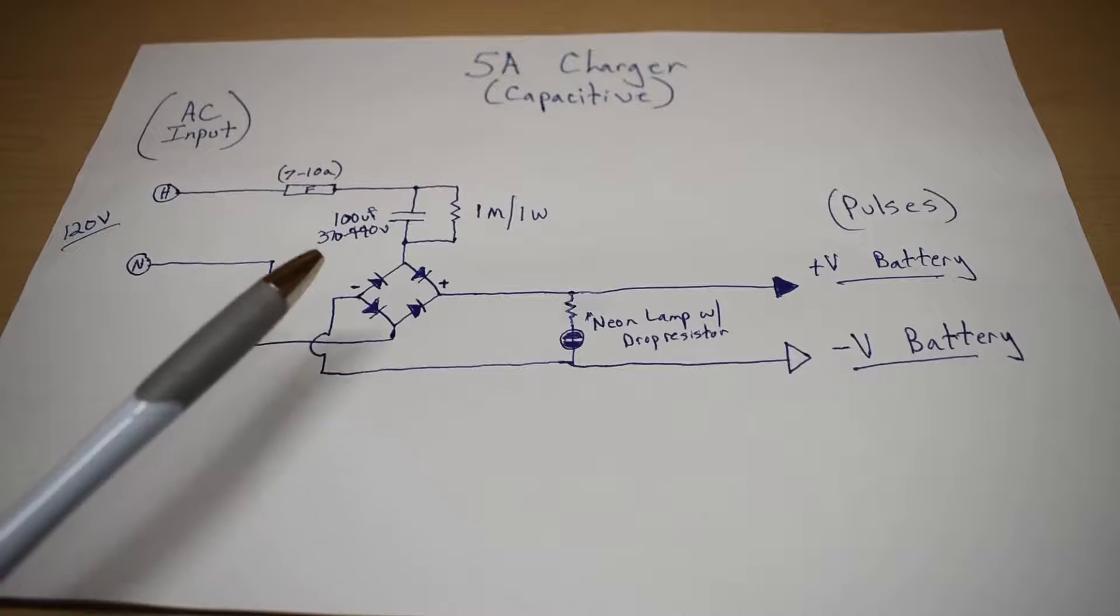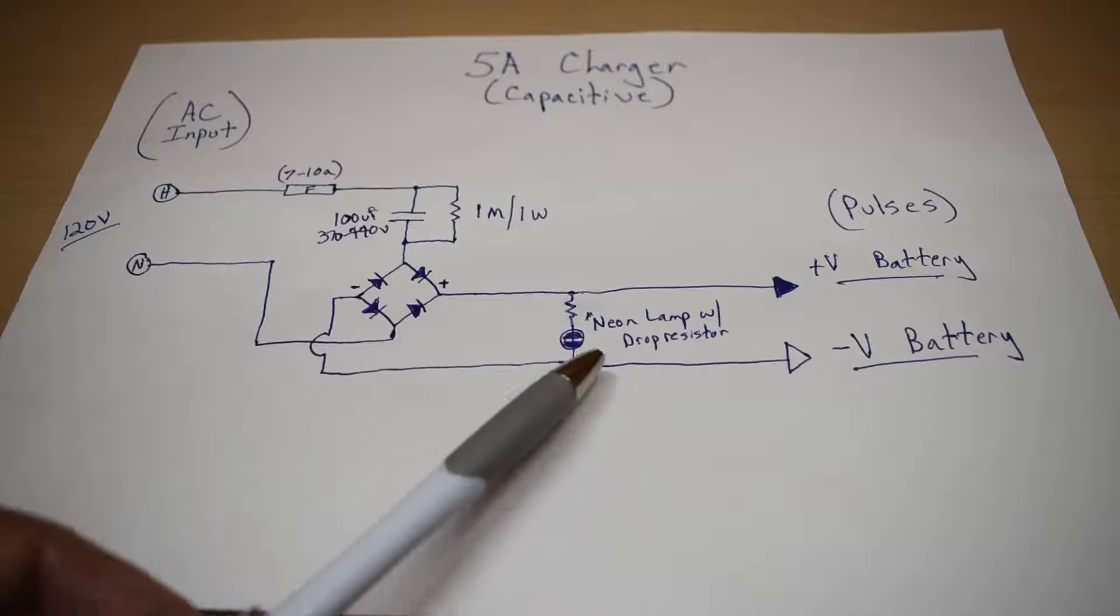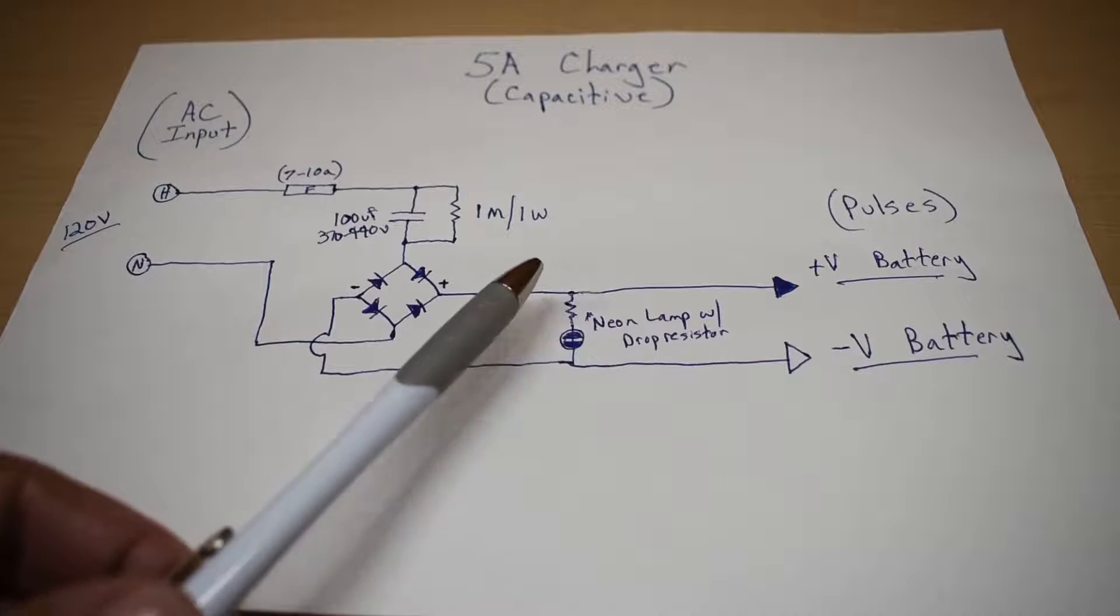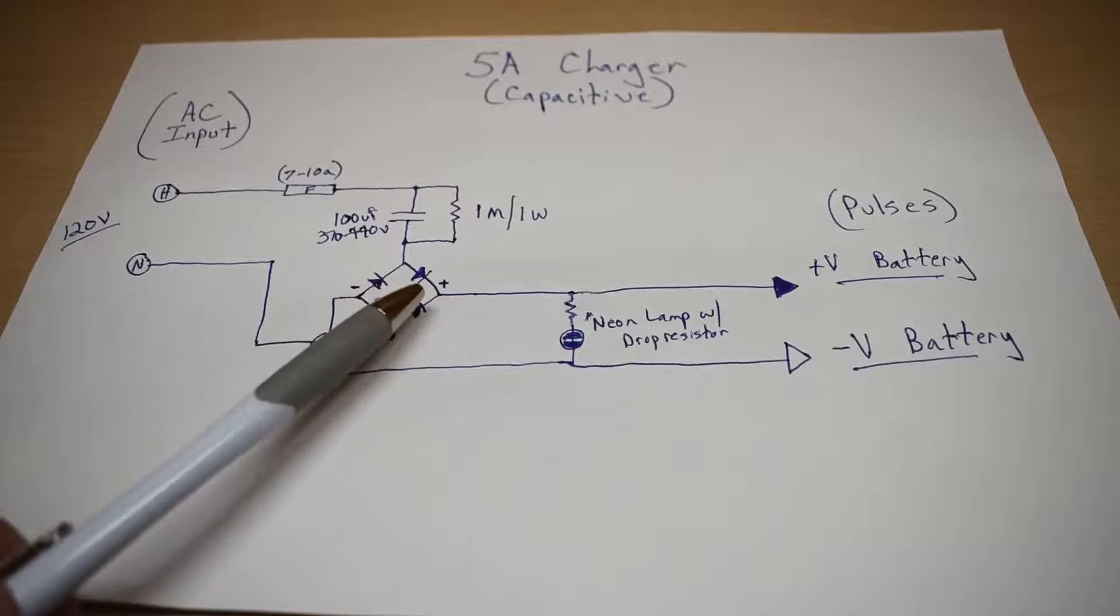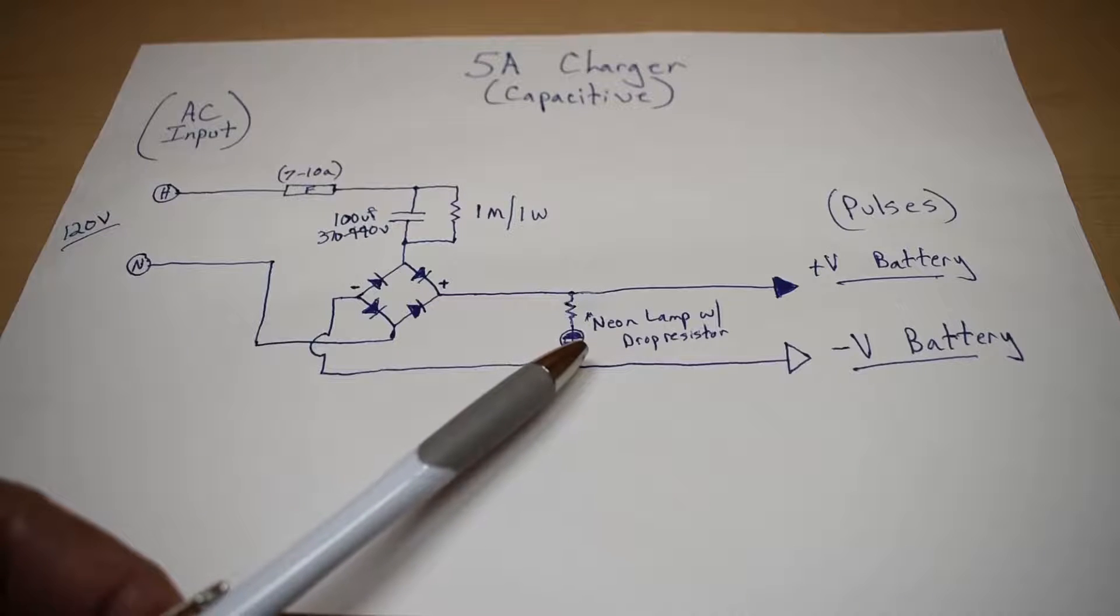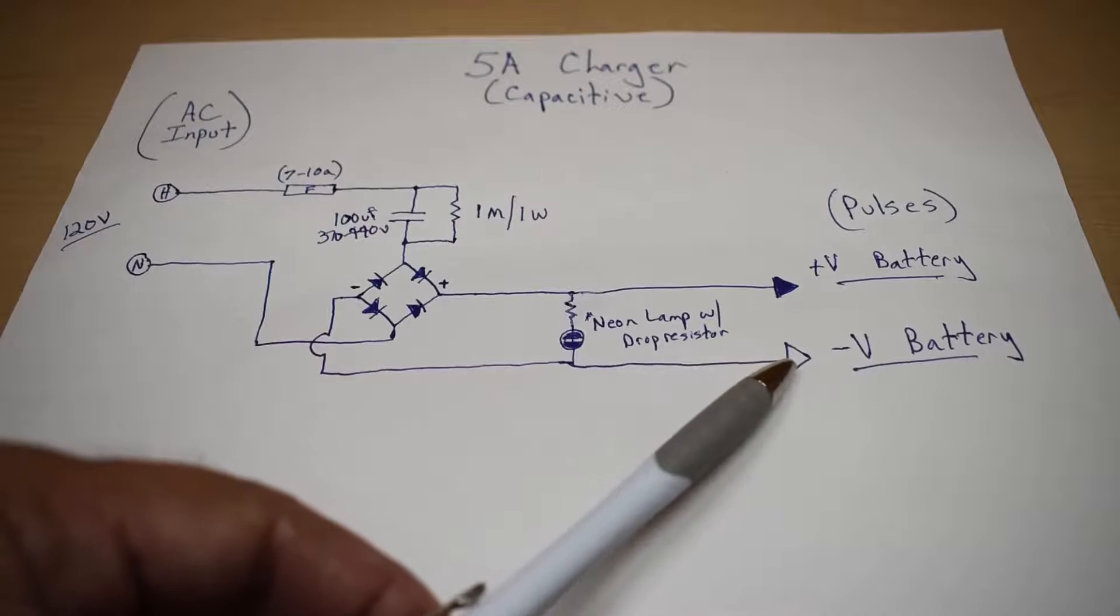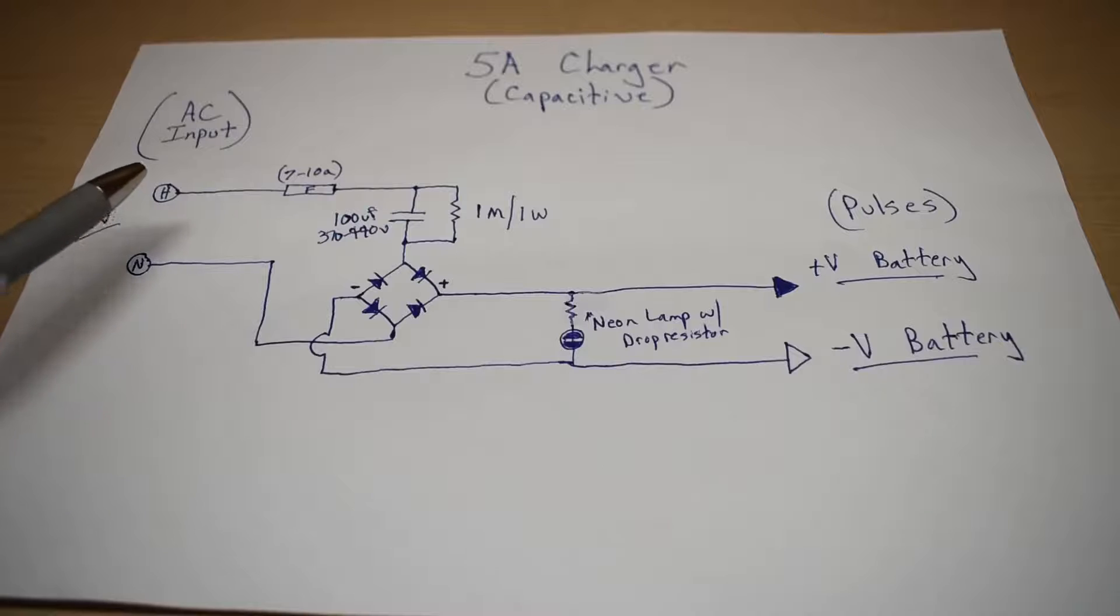When this charger is plugged in with nothing connected, this will rise up to around 115 or 120 volts. Once a load is applied, the battery, the voltage will never be anywhere near 115, but you will see the voltage of your battery start to climb fairly quickly. Under no circumstances do you go anywhere near these clamps while the unit is plugged in. Always unplug first, and then remove the clamps.